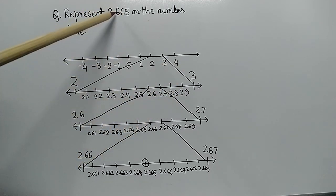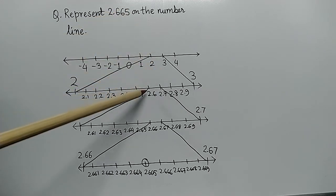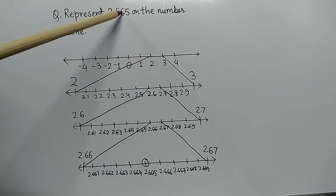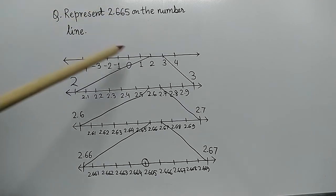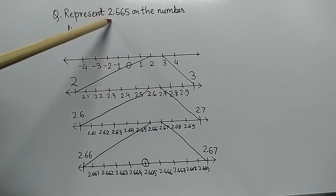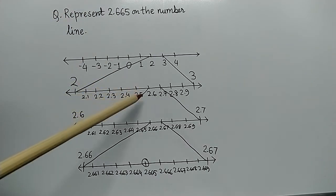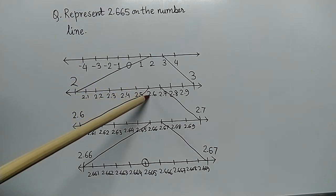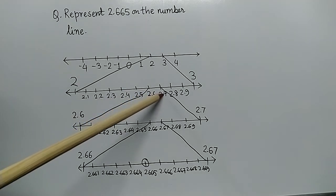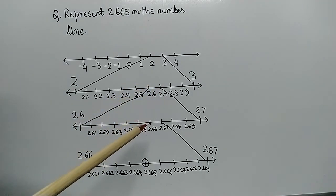Now we look at the next decimal place. After 2.6, the next digit is again 6, and then 5. So our number 2.665 will lie between 2.6 and 2.7.